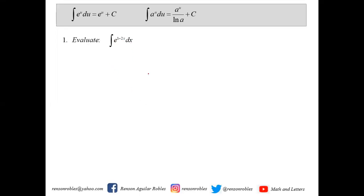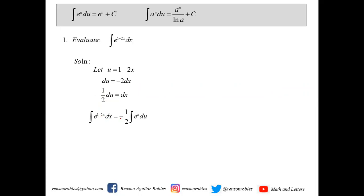We have the integral of e raised to 1 minus 2x dx. We let u be equal to 1 minus 2x, that's the power of e. We make sure that the derivative of 1 minus 2x can be found in our integral. We say that du is equal to negative 2 dx, and since there's only dx here, negative 1 half du equals dx. By change of variable, the integral becomes the integral of e to the u times negative 1 half du, which gives negative 1 half e to the u plus c. Writing back to the original variable: negative 1 half e raised to 1 minus 2x plus c.